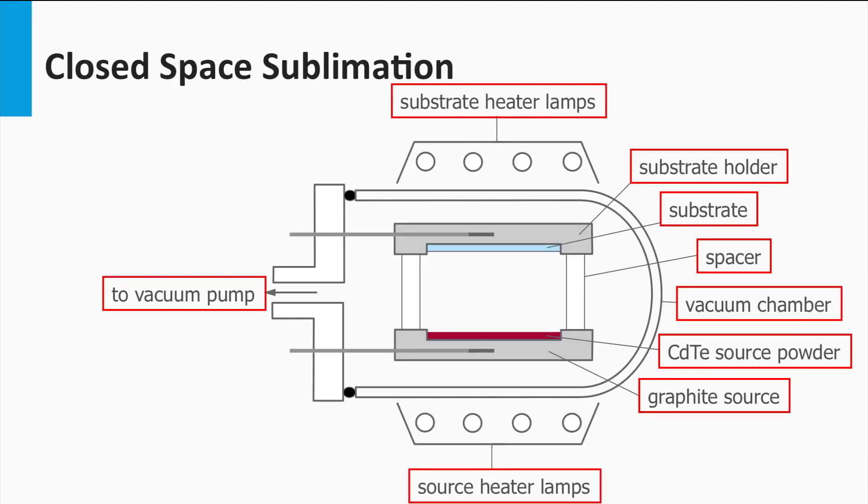The cadmium sulfide-cadmium telluride layers are in general processed using the closed space sublimation method. In a closed space sublimation method, the source and the substrate are placed at a short distance from each other, like a few millimeters up to centimeters under vacuum conditions.